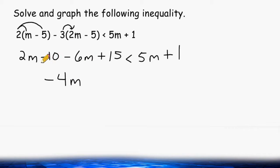And we can combine minus 10 and plus 15 which would result in plus 5. Next we just bring down the rest of our inequality which is 5 times m plus 1.